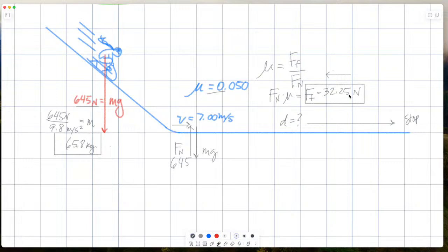So if we take 32.25 divided by 65.8, 32.25, which is the force, net force, divided by the mass, which is 65.8 kilograms, that will give me the acceleration. Now remember the acceleration has to be negative because she's slowing down. Negative because the force is pointing to the left and we know she's slowing down. So we've got two things that we know for sure that that acceleration is negative. So 32.25 divided by 65.8 will be a negative acceleration of 0.49 meters per second squared.